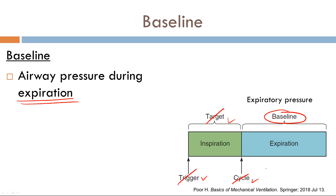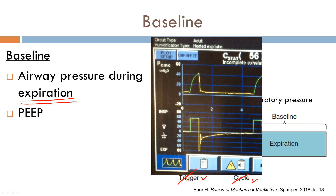Out of the four variables, it's probably the easiest one to conceptualize and understand, but it is also, in my opinion, the most neglected of the four when reading ventilator waveforms. The reason why it's important is it reflects your PEEP, or your positive end expiratory pressure. Taking a look here,